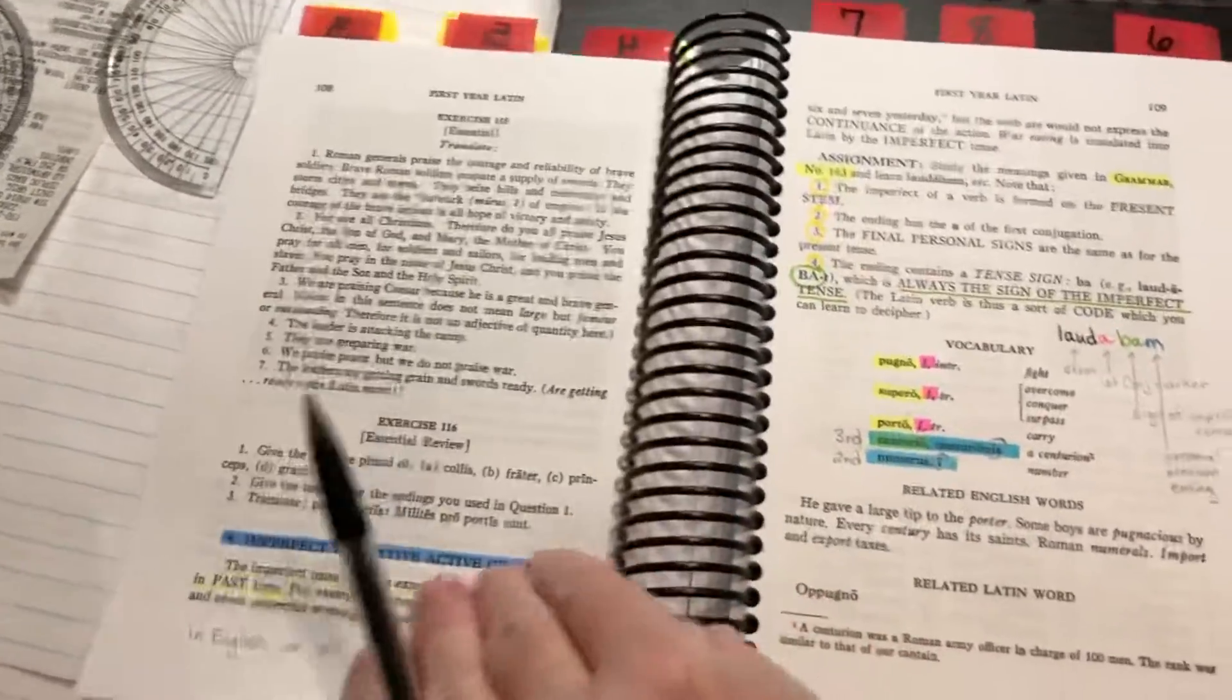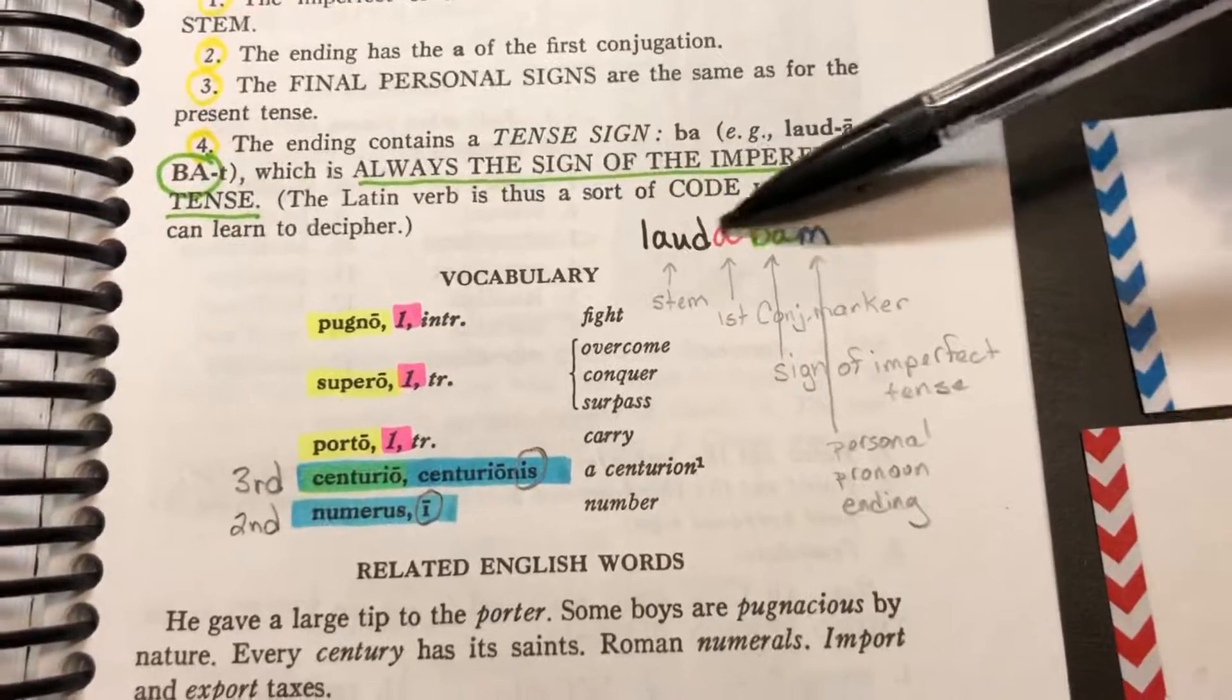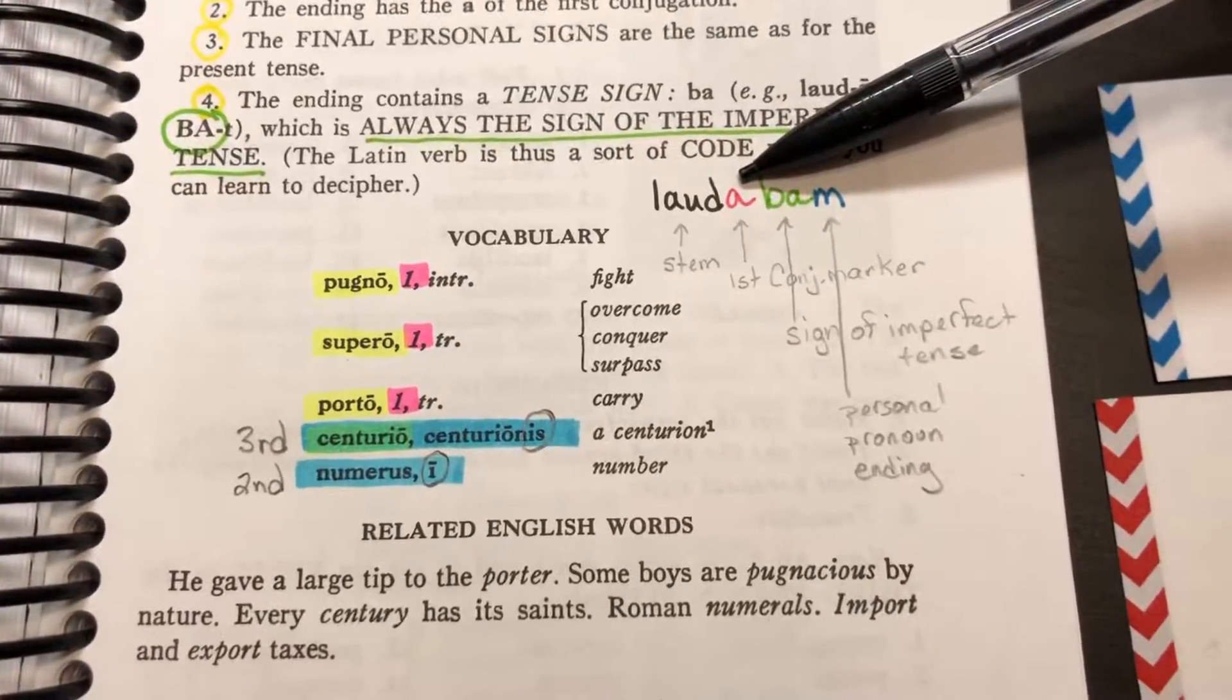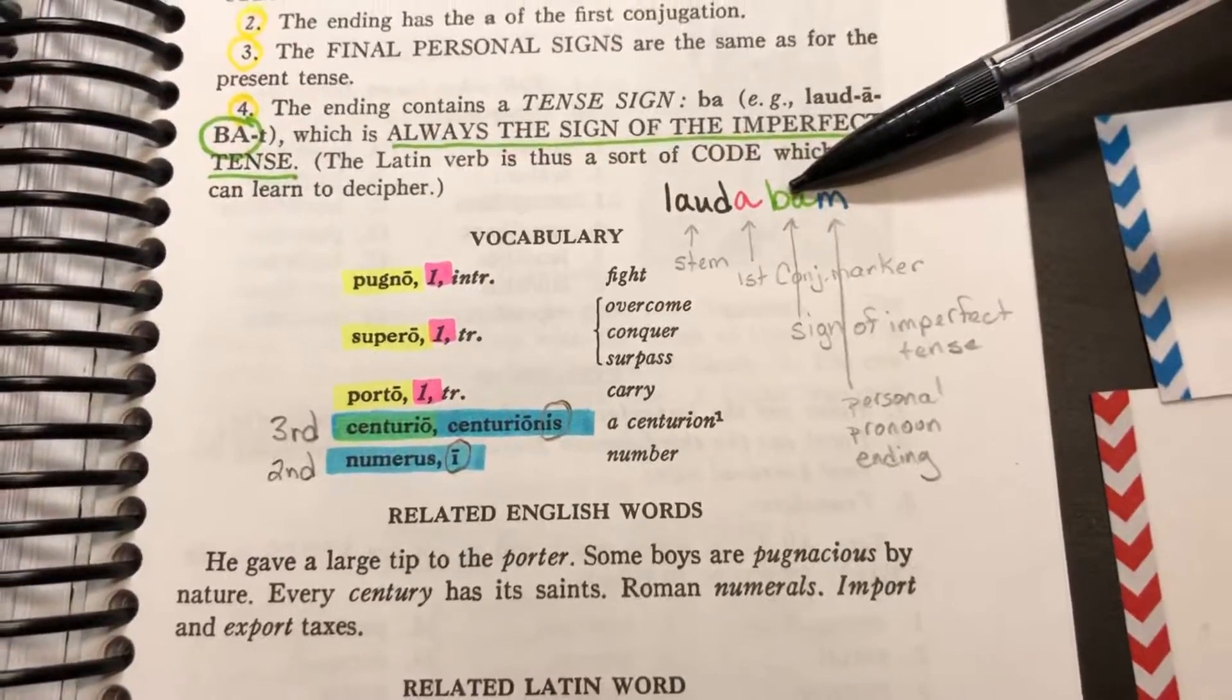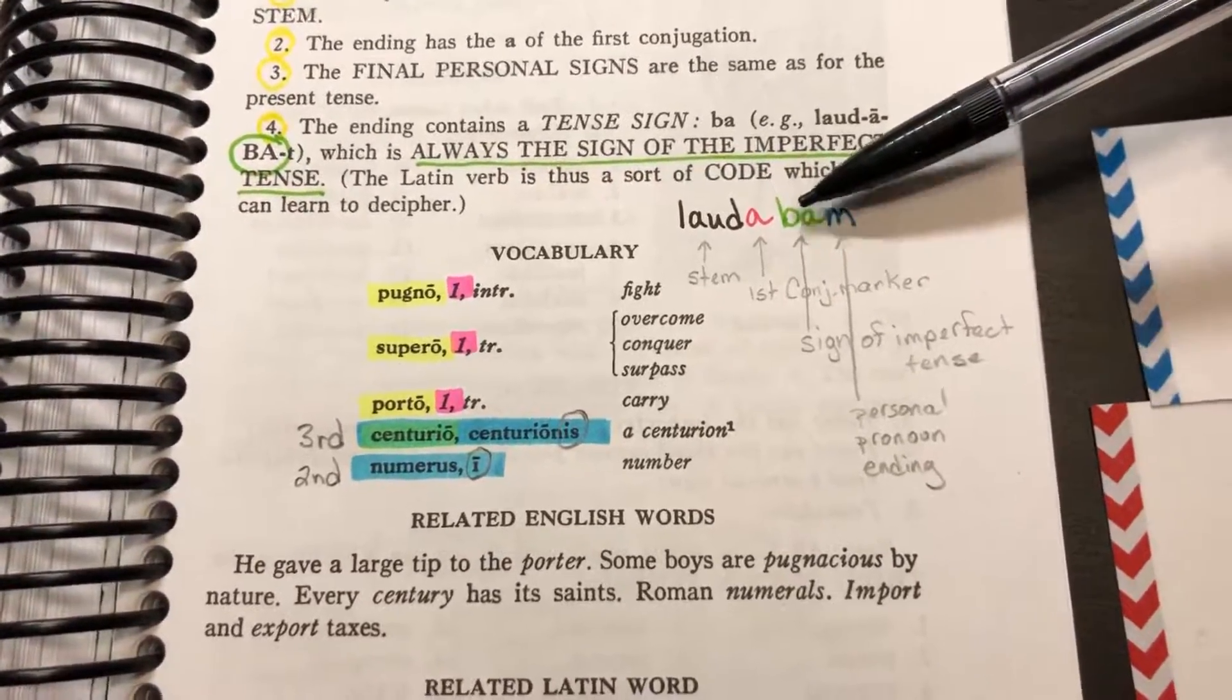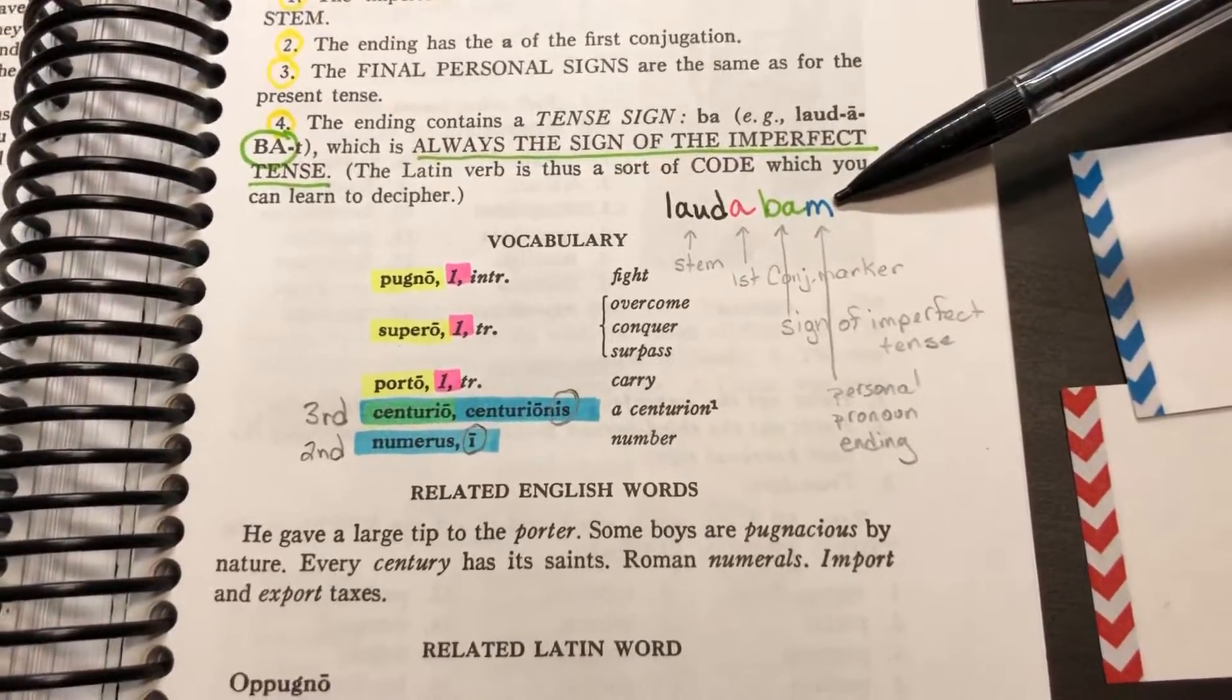On the verb, you're going to have a stem, and then this is what I call the conjugation marker. Then right here, this will give me the sign of the tense. This happens to be imperfect. And then here's your personal pronoun marker out here. I have this other chart over here that's in my Latin workbook that I have created that system as well.